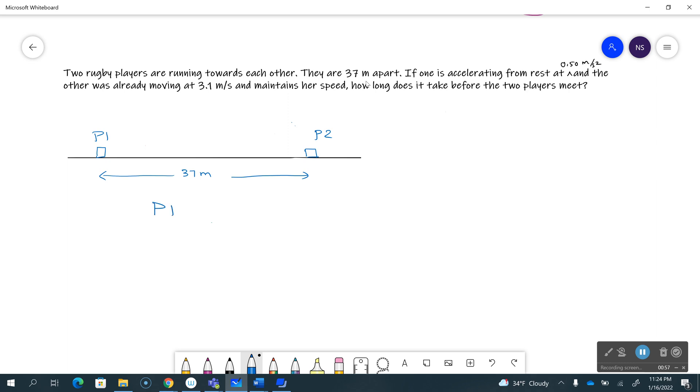So player one and then player two. Accelerating from rest, meaning it's at rest and she's going to start to accelerate. So for player one, vi is zero and acceleration is 0.5 meters per second squared.